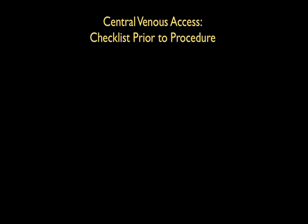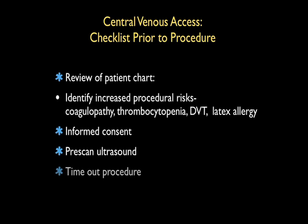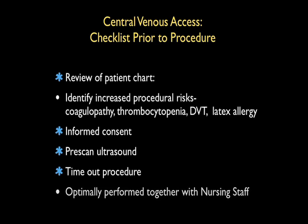Before performing central venous access, it is mandatory to perform a checklist prior to the procedure. First, review the patient chart for increased procedural risks such as coagulopathy, thrombocytopenia, the presence of a DVT within the upper or lower extremity veins, or a known latex allergy. Obtain informed consent, and perform a pre-scan ultrasound to look for clot in the targeted veins.